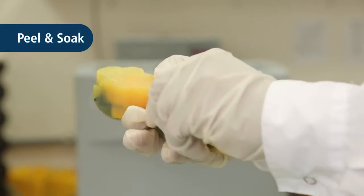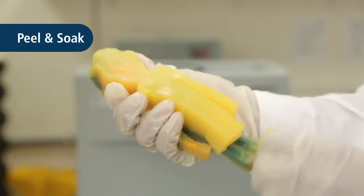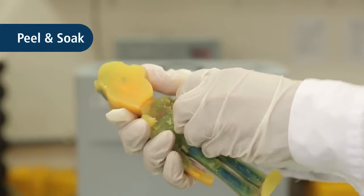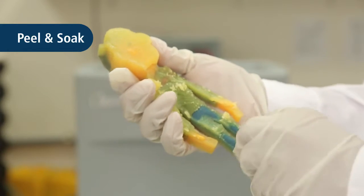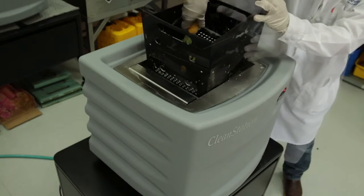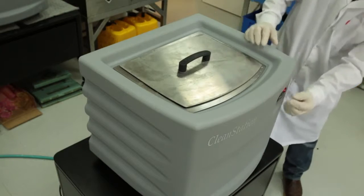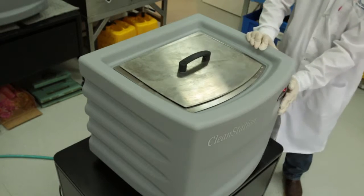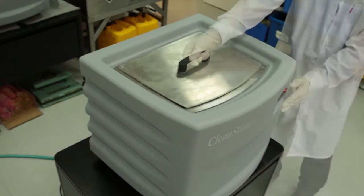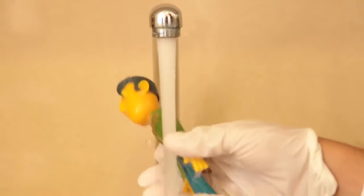The peel and soak method is especially effective for parts with thick layers of support material. First, remove the support material manually. Then, place the partially cleaned part in the cleaning solution to remove the remainder of the material. Once the support material has been dissolved, rinse the part in tap water.